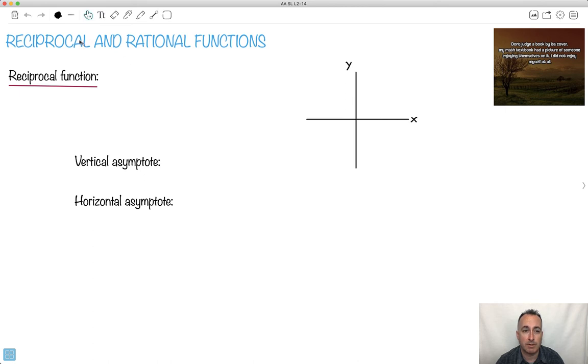I'm going to speak to you now about reciprocal and rational functions. So a reciprocal function, let me just write that down for you. A reciprocal function is just 1 over x. That's it.